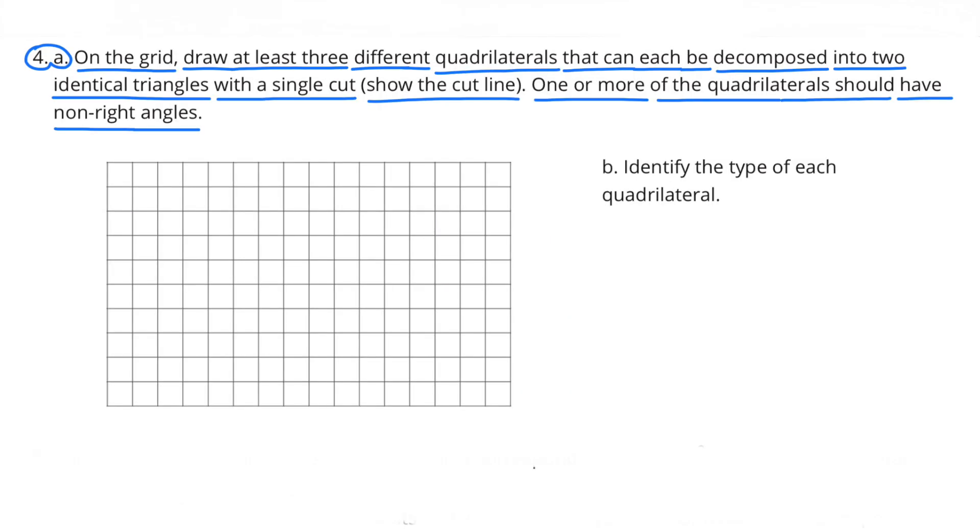Number 4a. On the grid, draw at least three different quadrilaterals that can each be decomposed into two identical triangles with a single cut. Show the cut line. One or more of the quadrilaterals should have non-right angles.